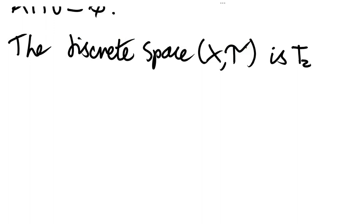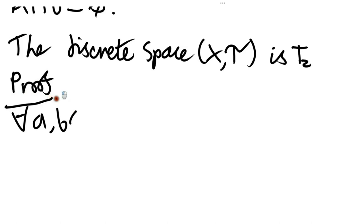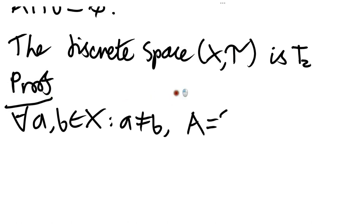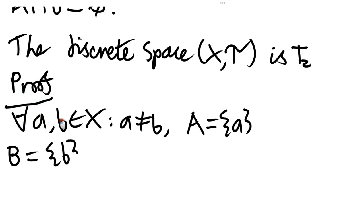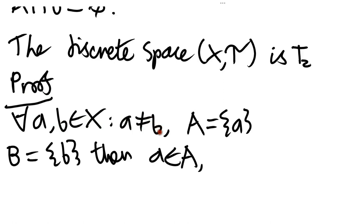The proof is fairly straightforward: for any pair of distinct points, if we just let capital A be the set that contains one of the points and capital B be the set that contains the other point, then of course our conditions are going to be satisfied because these two sets won't intersect.